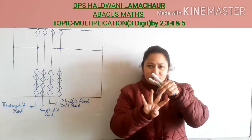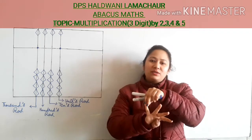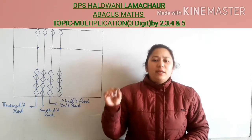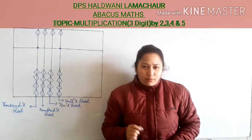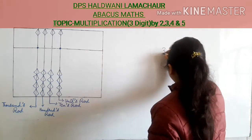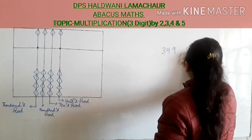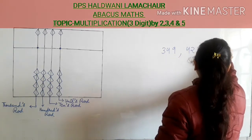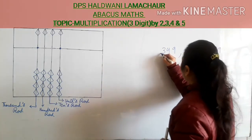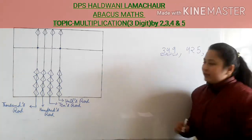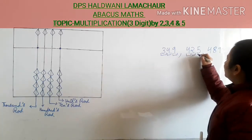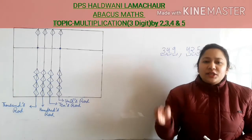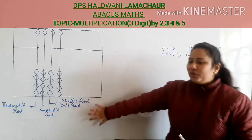The four rods are: units rod, tens rod, hundreds rod, and thousands rod. Now because our today's topic is 3-digit multiplication, we will take digits like this — 1, 2, 3, meaning the number which contains 3 digits. Today we will learn how to multiply a 3-digit number with the help of the Abacus tool.